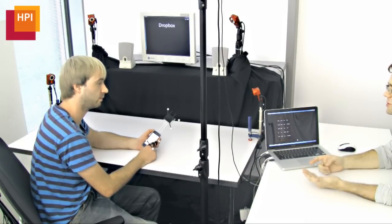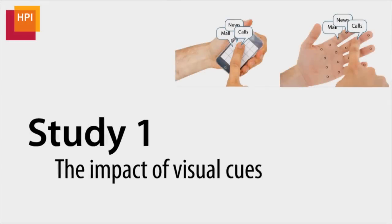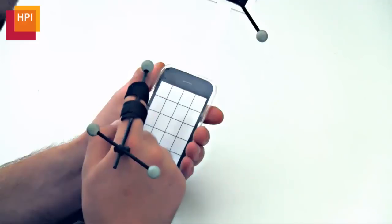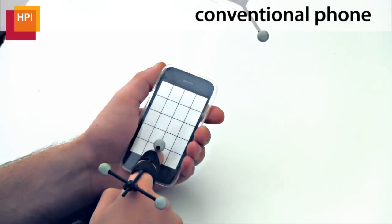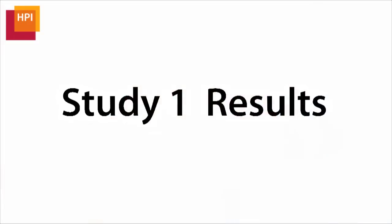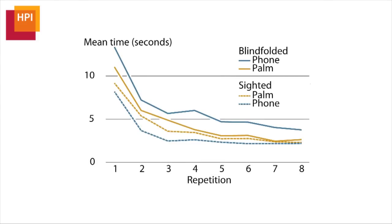The participant's task was to find and select targets in the interface based on the audio feedback. In the first user study, we evaluated our system and determined if watching your hands supports browsing the interface. We compared blindfolded to sighted operation, and interaction on the traditional phone interface to interaction on the participant's palm. We found that watching your hands interact leads to the highest performance overall, but when blindfolded, the tactile cues available on the participant's palms greatly improved performance. However, it remained unclear why exactly the hand performed better.